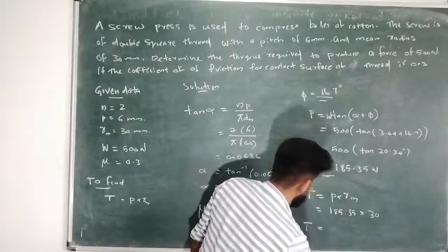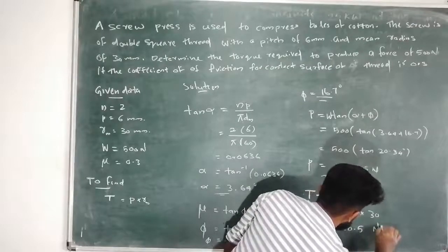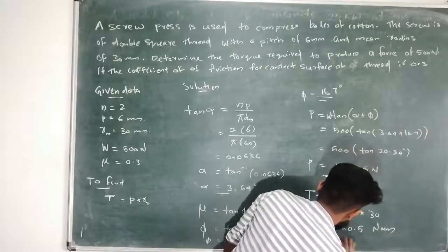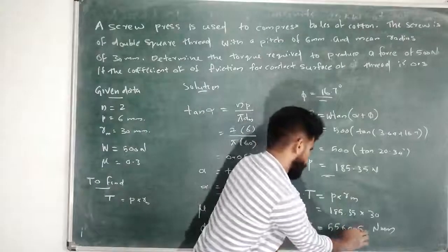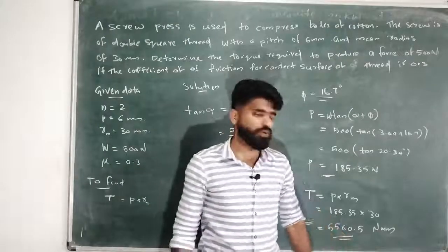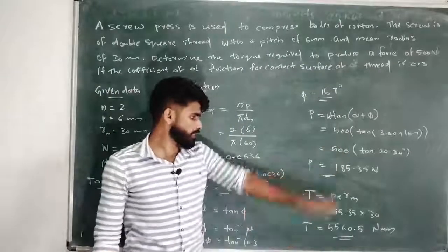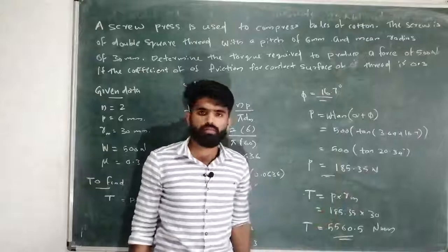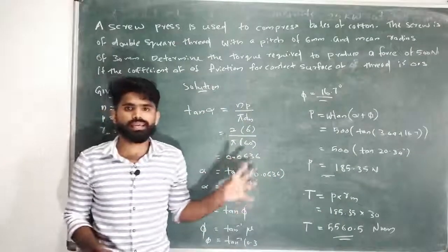T is equal to 5560.5 Newton-mm. This is the torque. This is a simple power screws problem in the case of a screw jack.